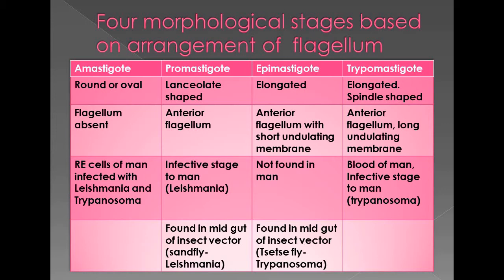Epimastigote is not found in man but is found in the tsetse fly midgut. Trypomastigote is the infective form of Trypanosoma.